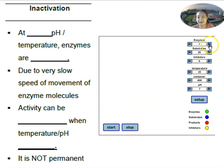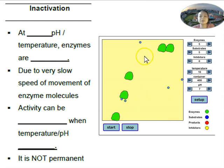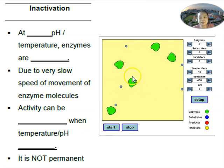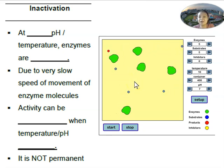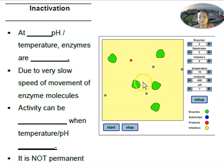Let's say I have 5 enzymes and 5 substrates, and I put the temperature at 10 degrees Celsius — that's very cold. Your green structures are your enzymes and your blue circles are your substrates. I want you to notice how the enzymes are actually moving at low temperature. Are the enzymes and the substrates moving very fast or very slowly? Good — some of you are saying they're moving slowly. And because they're moving slowly, they don't always bump into the substrate successfully.